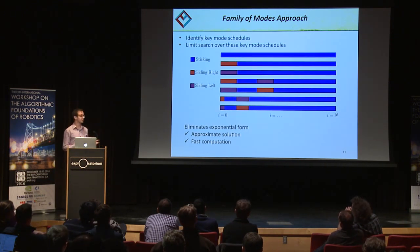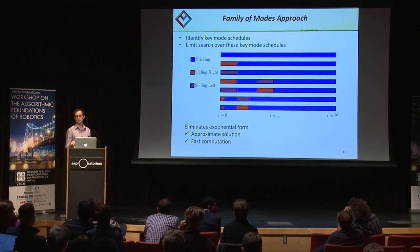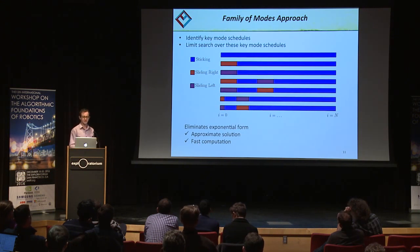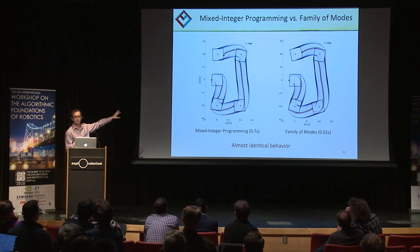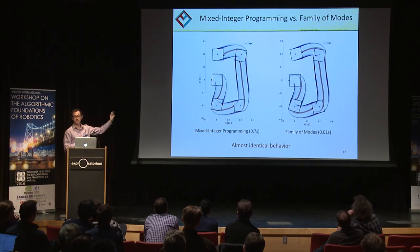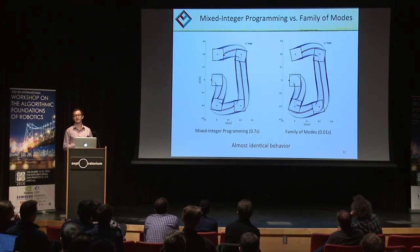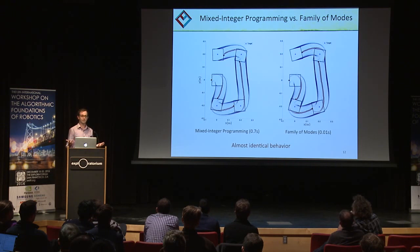If you can do this, it eliminates the combinatorial form. It's an approximate solution, but enables very fast computation, since within each mode this is just a quadratic program. The key result for this manipulation task was noting that MIQP — which solves 3^N quadratic programs — compared to family of modes, which was solved using only three modes, gives almost identical behavior. This is really surprising. We think that because you're replanning at 100 Hz, if you pick your modes smartly enough to represent the dynamics, you'll always go in the right direction.